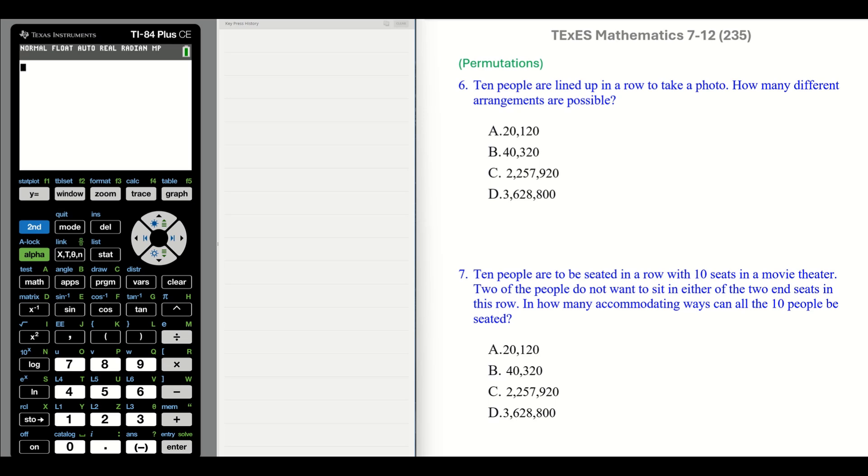Now we'll deal with some permutations. Number six: 10 people are lined up in a row to take a photo. How many different arrangements are possible? Keywords: line up, and arrangements. Notice we are not discussing probability.